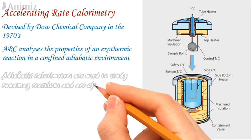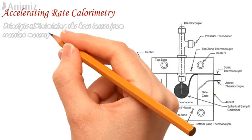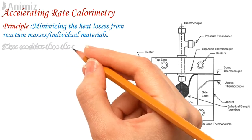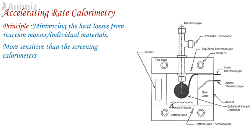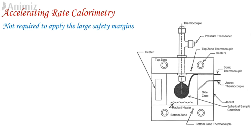Adiabatic calorimeters are used to study runaway reactions and evaluate the behavior of reactive hazards. They operate on the principle of minimizing heat losses from the reaction mass. The chemical heat generated is harnessed only to raise the temperature of the sample and the part of the container in contact with it. They are more sensitive than screening calorimeters and can measure heat generated from chemical reaction or decomposition without losing heat to the surroundings. This means results are almost directly applicable to large-scale manufacturing, unlike DSC and TSU where large safety margins must be applied.